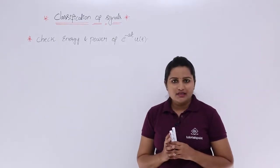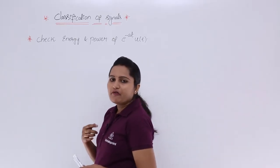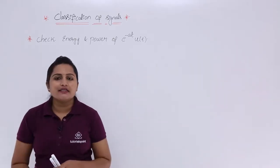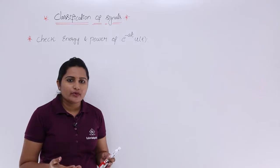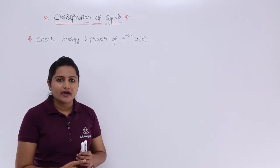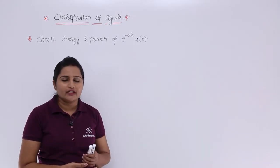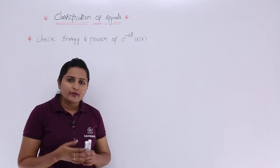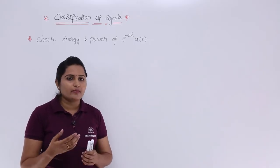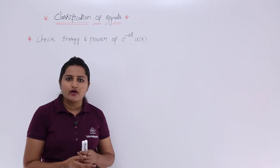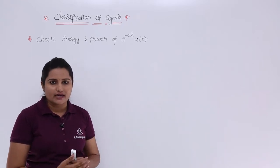First, consider the signal. You already know how to sketch e^(-aT)u(T). We have already sketched so many signals like e^(-aT)u(T), e^(+aT)u(T), e^(aT)u(-T), and e^(-aT)u(-T) — so many signals have been sketched up to now.